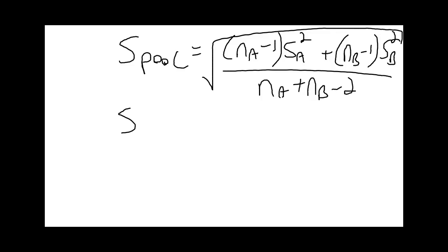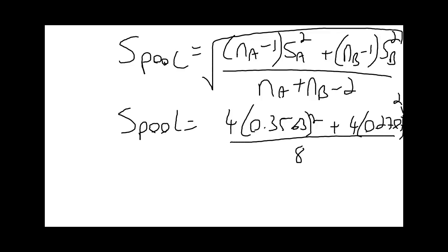The pooled standard deviation is 4 times 0.3563 squared, plus 4 times 0.2707 squared, divided by 8 (that's 5 plus 5 minus 2), and then square root it. We end up with a pooled standard deviation of 0.3122.